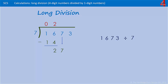Three times seven is 21, so we put the three up there, and three times seven is 21. We're going to take that 21 away from the 27, which leaves six. Now we bring down our next digit, which is three. How many times does seven go into 63? It'll go in exactly nine times. Nine times seven is 63 and we take that away.